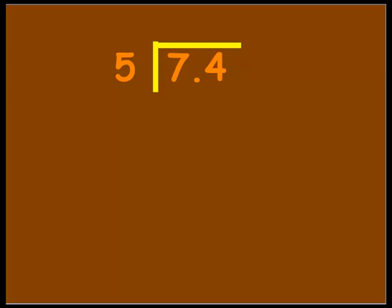We're going to show you one last example. In this example, we're going to have to continue the process of dividing even though our dividend stops in the tenths place. When you are dividing with decimals, you cannot put a remainder as a fraction or write an 'r' in a number — decimals are essentially your remainders. We're going to show you how the process could continue. Just like in the other problems, we move our decimal up from the dividend into the quotient directly above where it was, then divide like normal.